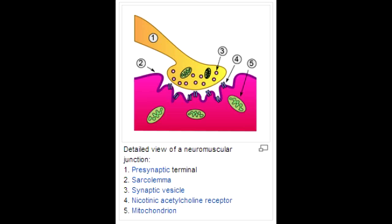The non-depolarizing neuromuscular blocking drugs include tubocurarine, atracurium, mivacurium, pancuronium, vecuronium, and rocuronium. The mechanism of action of these drugs is to act as a competitive antagonist, competing with acetylcholine for receptors. The drugs that can reverse their effect include neostigmine, edrophonium, and other cholinesterase inhibitors.